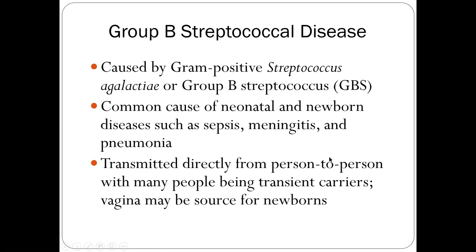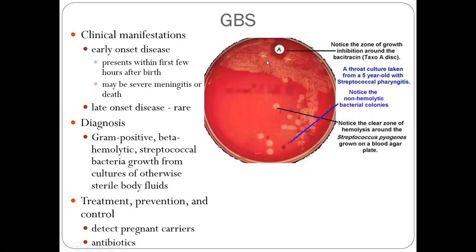Group B streptococcus — Streptococcus agalactiae — is also gram positive and is usually transferred person to person, especially to newborn babies. That is why pregnant women at 35–37 weeks must do a screening test; otherwise a newborn baby can develop pneumonia, meningitis, and sepsis (bacteremia). To differentiate the two: Streptococcus pyogenes shows a clear zone and is susceptible to the bacitracin disc (A disc), while Streptococcus agalactiae Group B is resistant to bacitracin — bacteria continue growing around the disc.